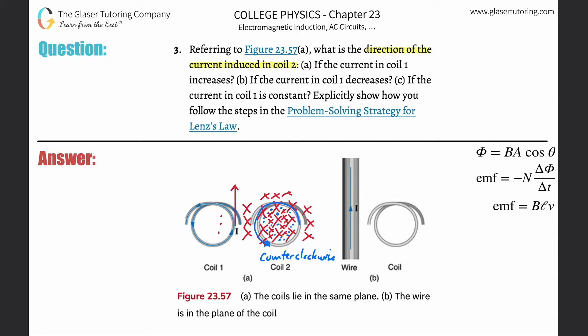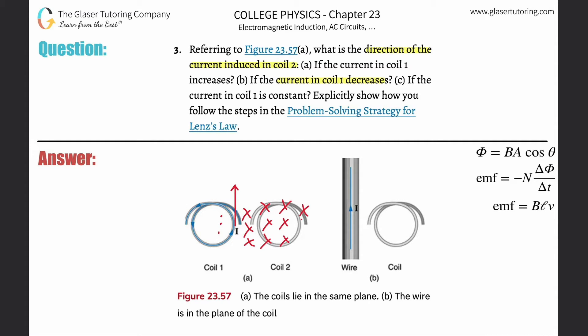Now moving on to letter B: if the current in coil one decreases. The current is still going counterclockwise, still producing magnetic field vectors going into the page. But now the strength of the magnetic field is decreasing, so we remove some of those x's.